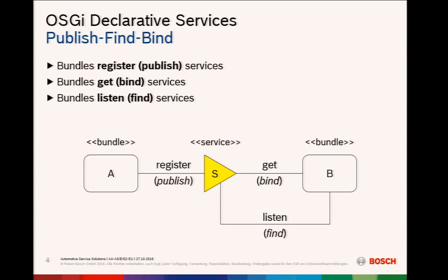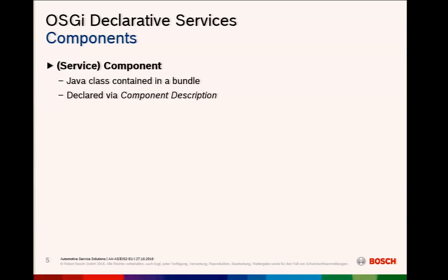The first thing I realized is that there are a lot of terms in the specification and it's hard to follow them. It starts with 'service component', because in declarative services you're first talking about components, and they're not automatically a service — although the specification is called declarative services. A component is a Java class that is declared by a component description. So to have an OSGI component, you have these two artifacts: the Java class and the component description.